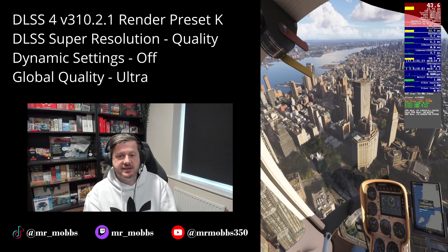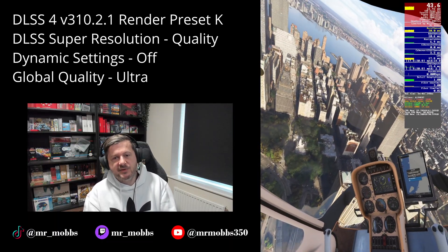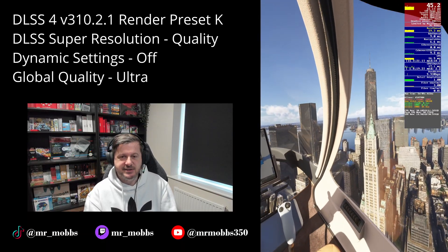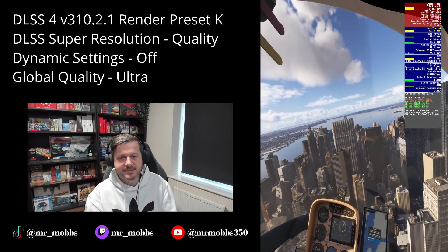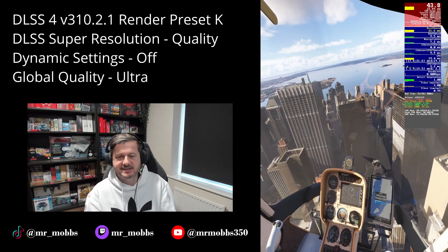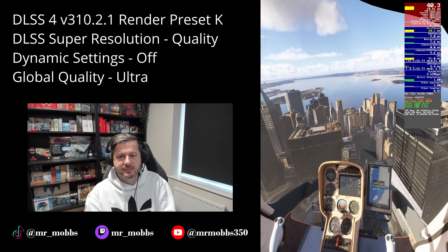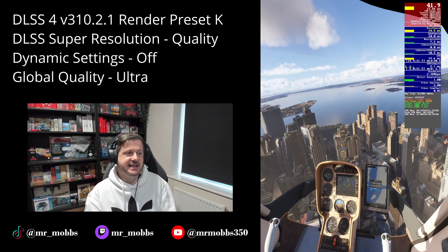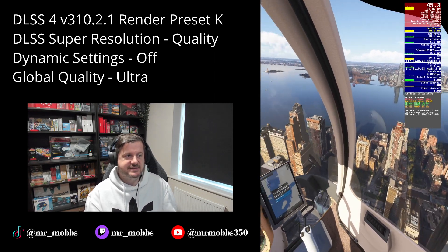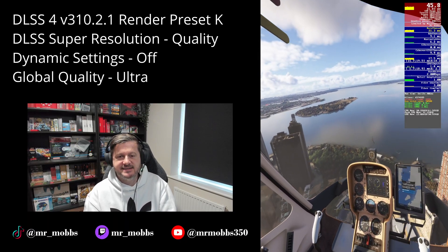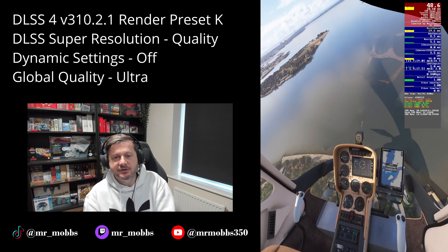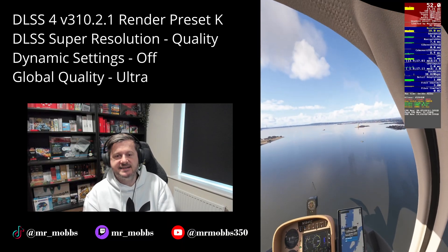My experience with DLSS 4 is that it appears to have dropped a few frames compared to the older DLSS model. It doesn't look much different to me honestly — some veteran simmers will probably disagree, but I don't notice a massive difference swapping it over. This is running on DLSS 4 Super Resolution Quality mode. Dynamic settings is off, because as you rightly pointed out, I'd left it on in my previous video — so on all these tests it will be switched off.